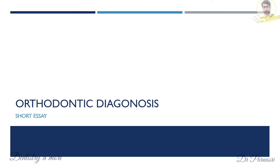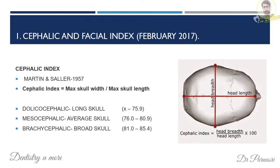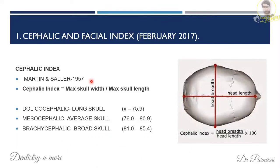Next topic: orthodontic diagnosis. The short essay is on cephalic and facial index, given by Martin and Saller. Cephalic index is the maximum skull width divided by the skull length, multiplied by 100. Based on this ratio, it is divided into dolichocephalic (long skull), mesocephalic (average skull), and brachycephalic (broad skull), with specific ratio values for each.